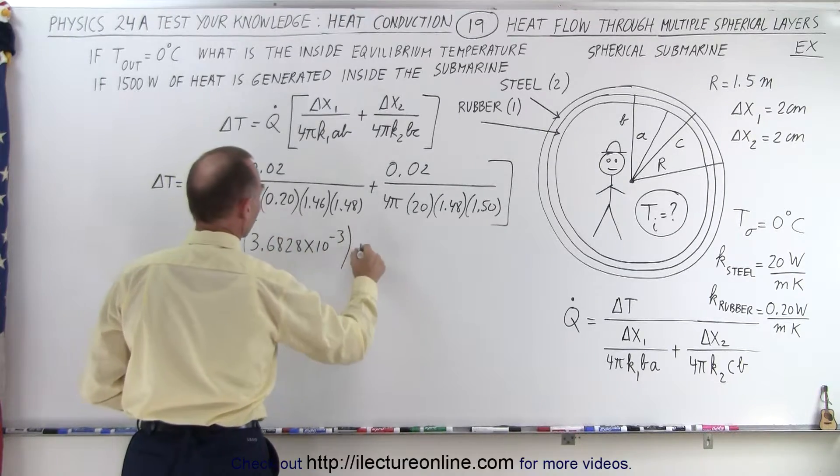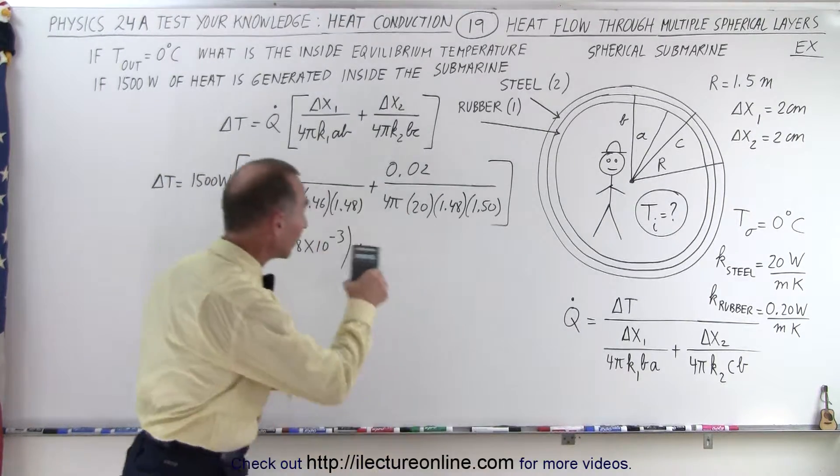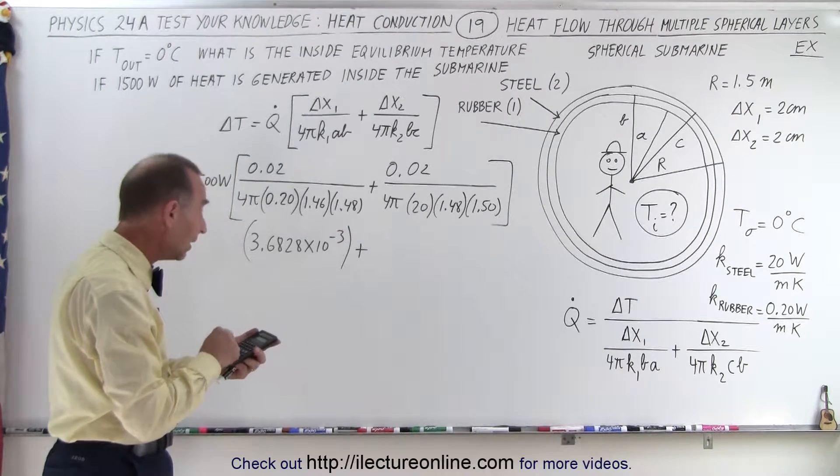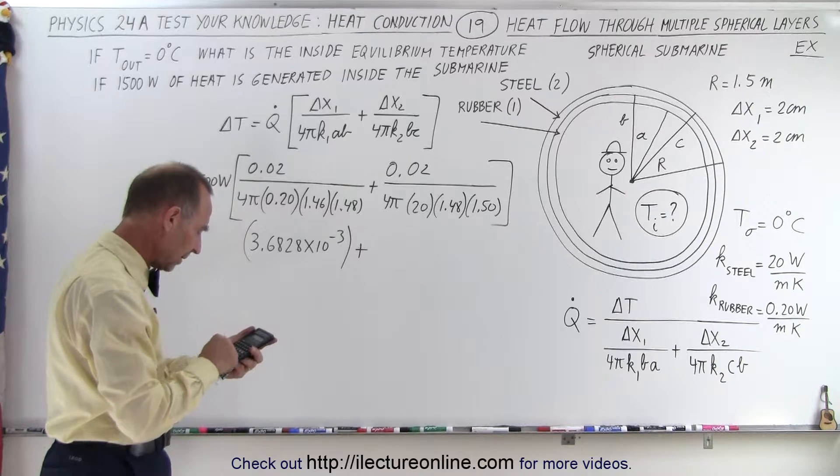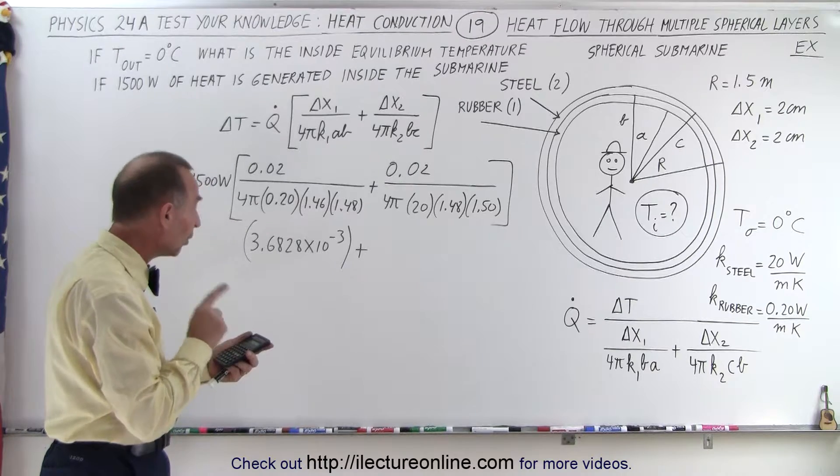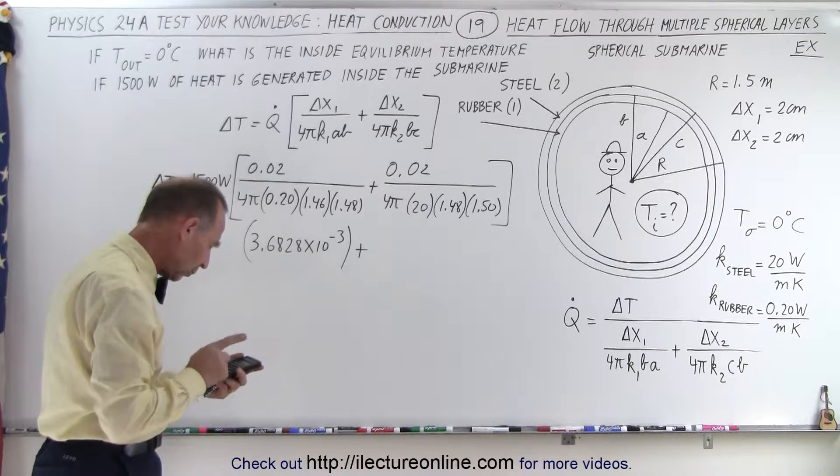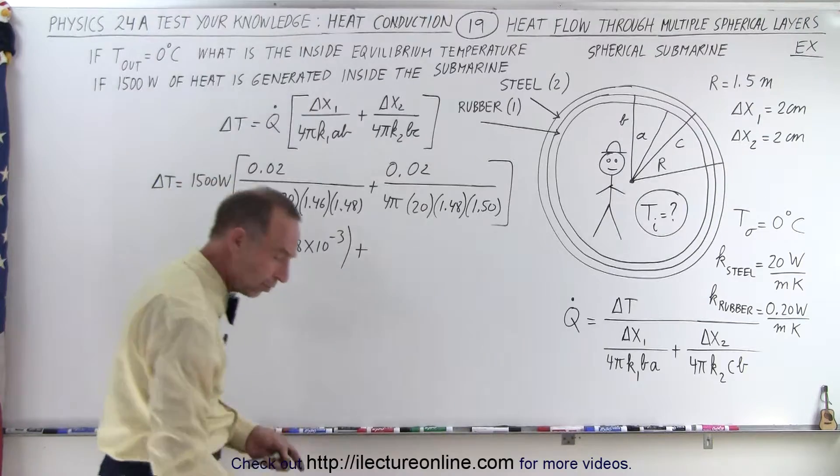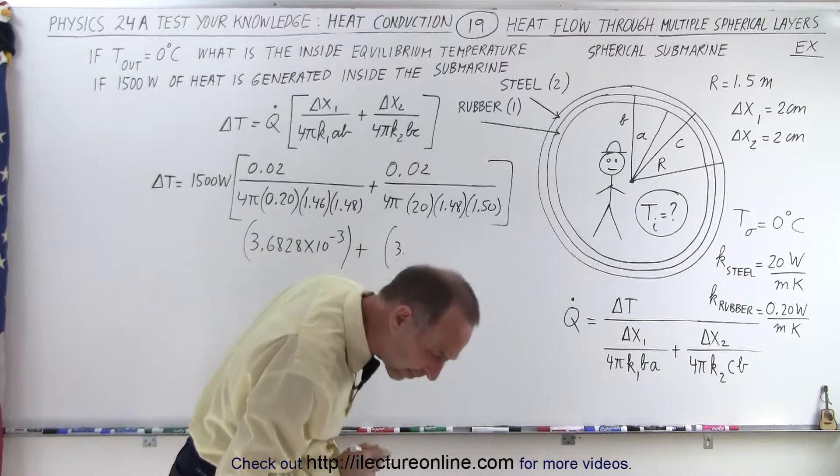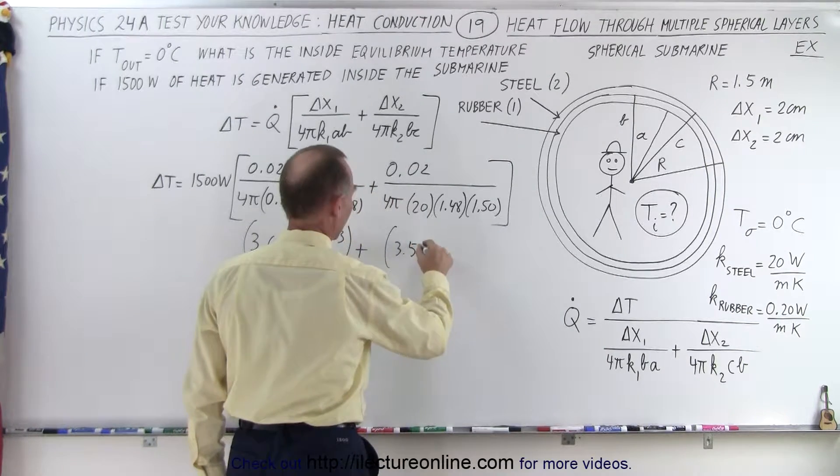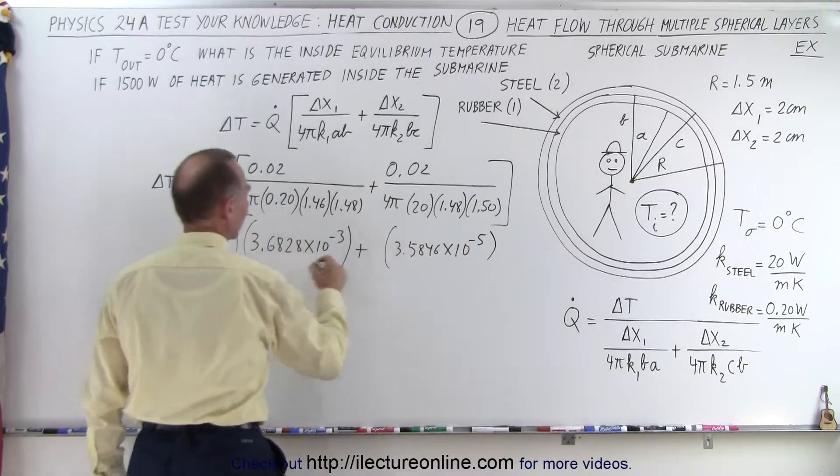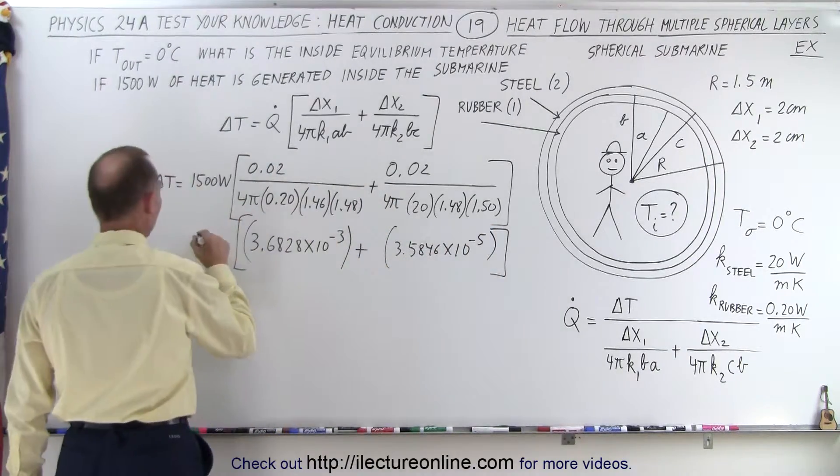Plus, now we'll calculate that one. So we'll calculate that one. So we have 4 times pi times 20, times 1.48 times 1.5. Take the inverse of that, and multiply it times 0.02, and we get 3.5846.